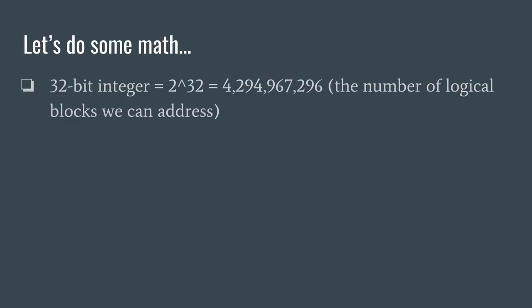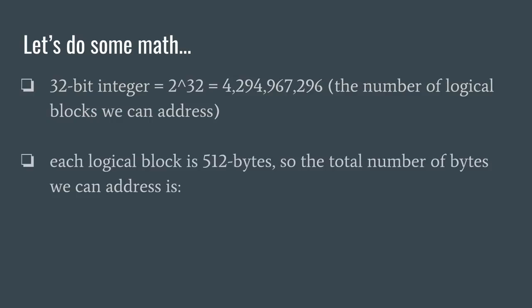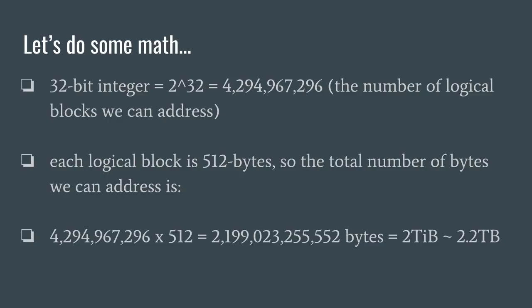Let's do some math and see what 32 bits can do for us. With a 32-bit integer, we can calculate the total number of logical blocks we can count by taking 2 to the 32nd power. This results in a number that is about 4.29 billion. For the longest time, most hard drives and storage devices used 512-byte sectors. If we multiply the 4.29 billion by 512 bytes, we get 2 tebibytes, or 2.2 terabytes. So here we've identified where the so-called 2 terabyte limit comes from.